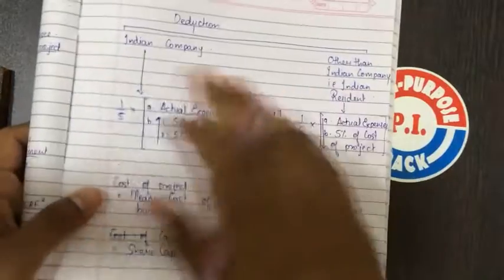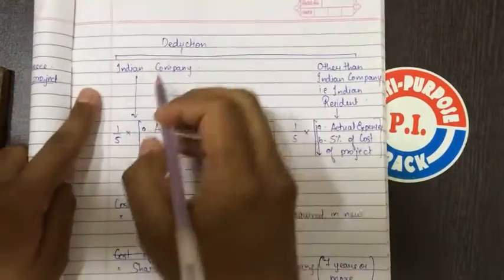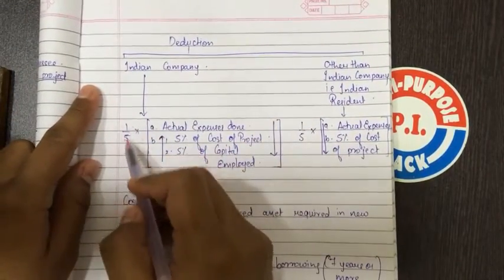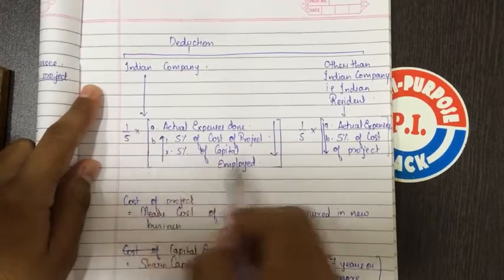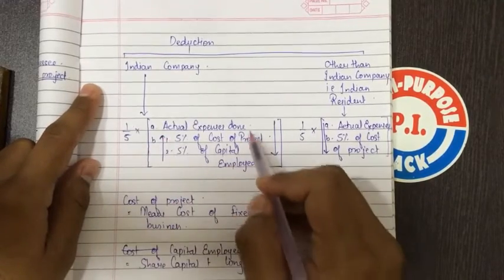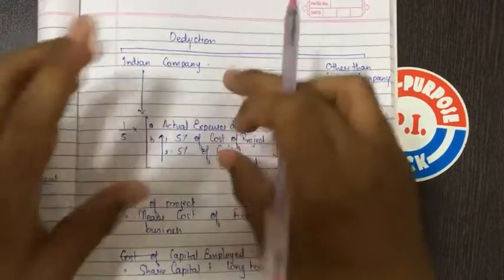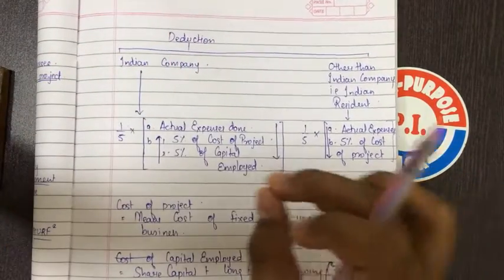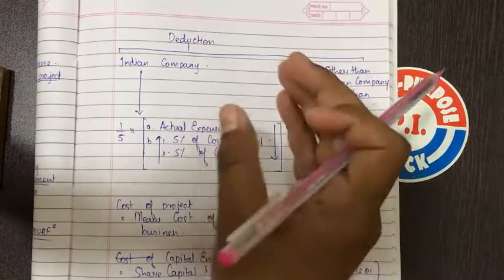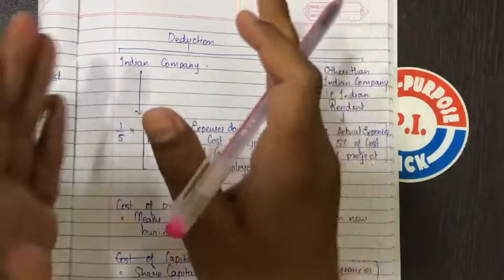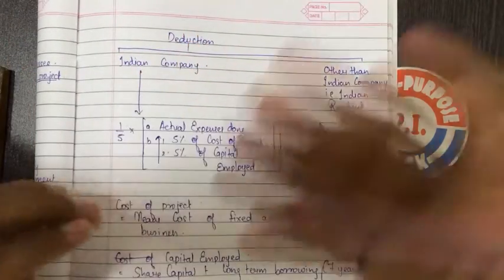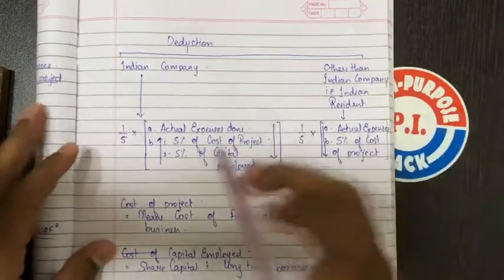Other approved expenses include project report, engineering services, shares and debenture issue expenses, market survey, underwriting commission, registration fees, feasibility report, foreign collaboration expenses — these are allowed as deduction by an Indian company in the following manner: one-fifth of whichever is higher (between A and B), and then whichever is lower, divided by five, is allowed in the previous year. The remaining four parts are allowed in the next previous years.